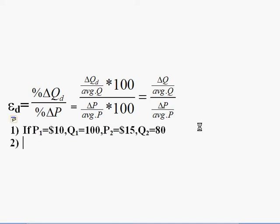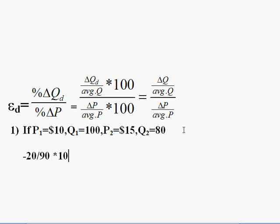Let's calculate the percent change in quantity first. The price goes from $10 to $15, and quantity goes from 100 to 80. The change in quantity is -20. The average quantity is (100 + 80) / 2 = 90. So: -20 / 90 × 100 = -22.22 percent change in quantity.